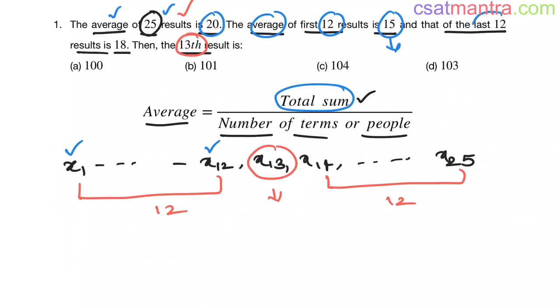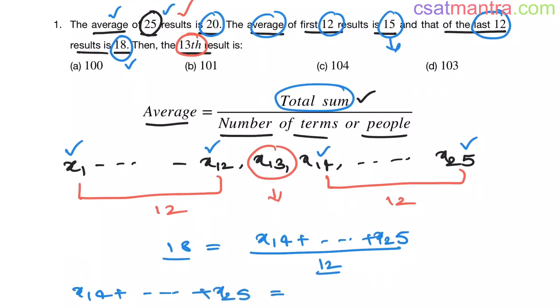Now, average of last 12 results is 18. Last 12 results are x14 to x25. Their average is 18. So 18 equals total sum x14 to up to x25 by number of terms, 12. So x14 to up to x25. So 18 times 12, 18 times 10 are 180, 18 times 2 are 36. So 180 plus 36, this is 216.